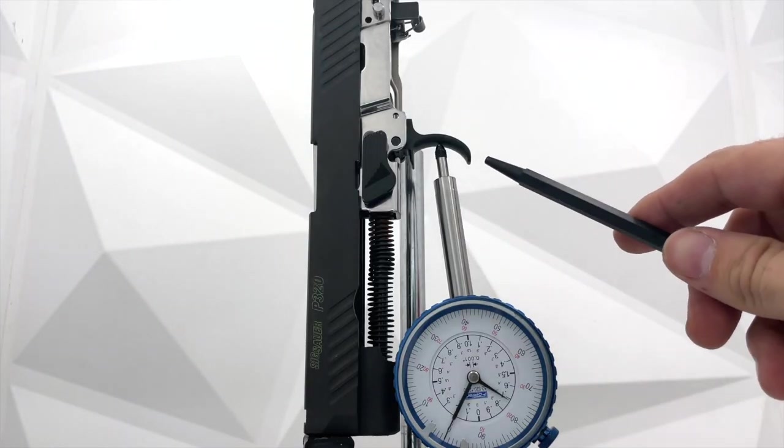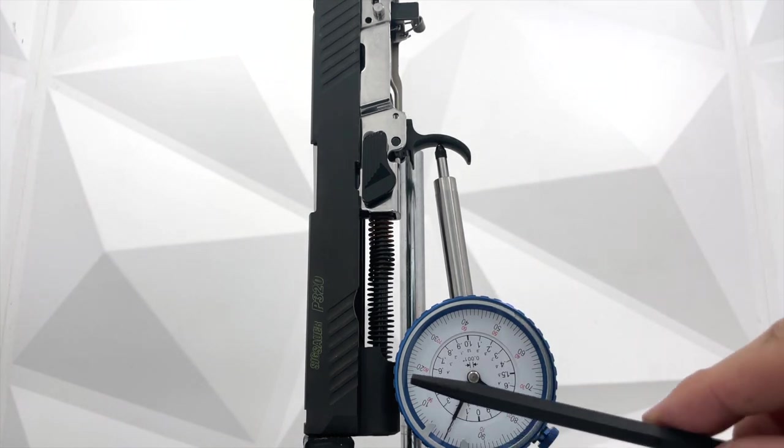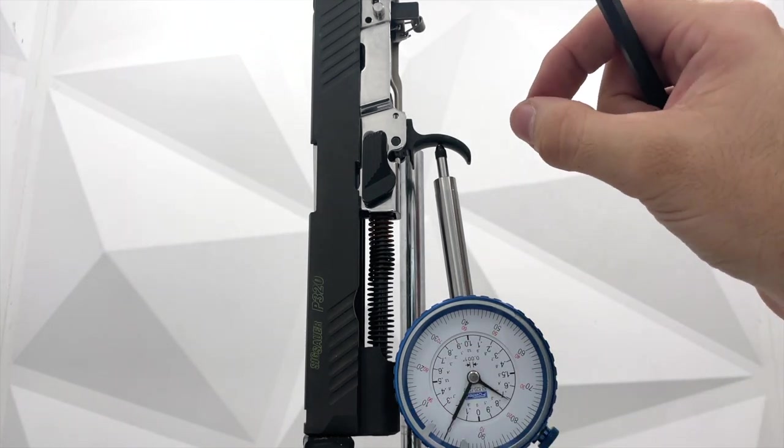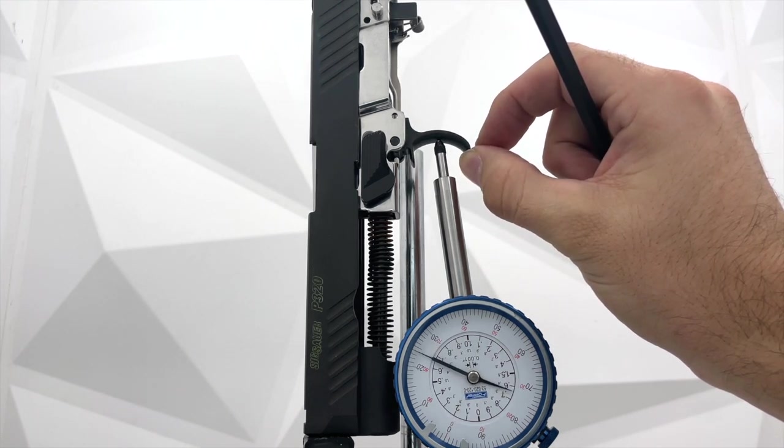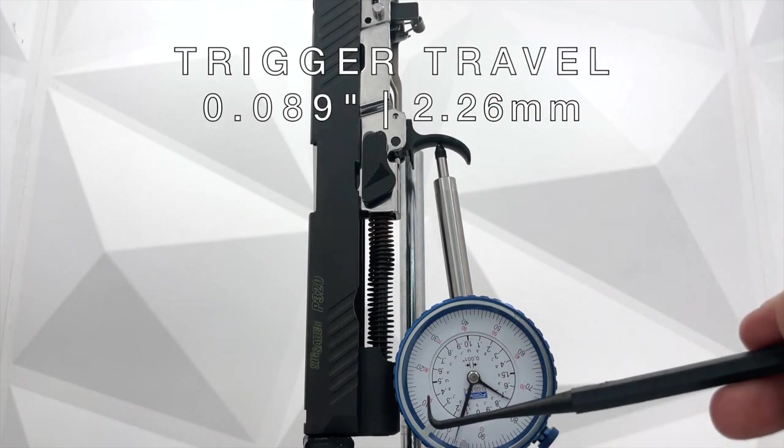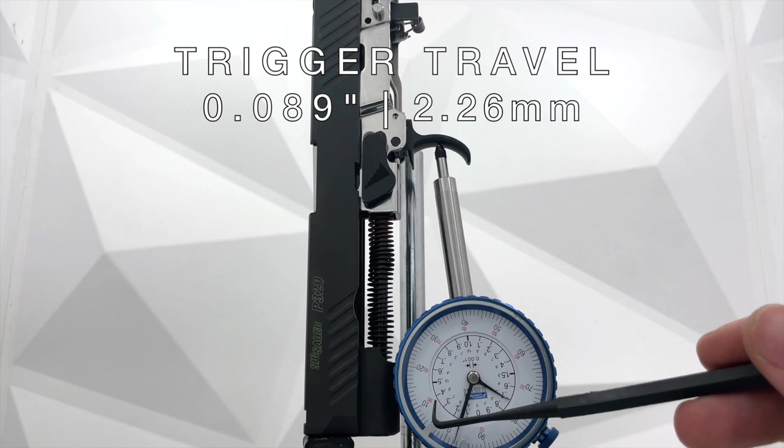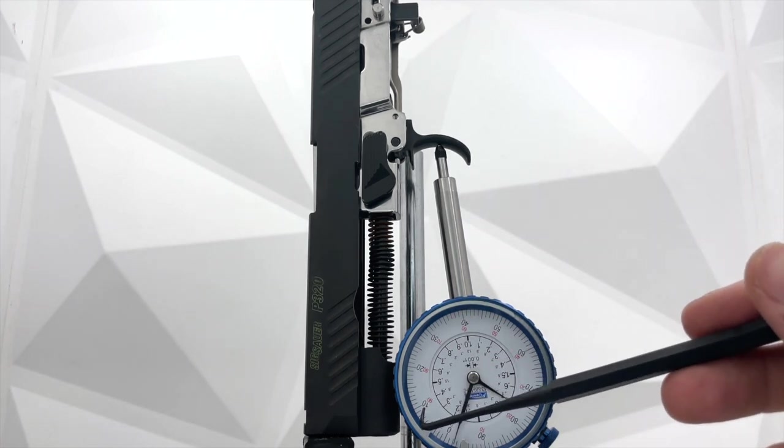Okay. We'll pull the trigger and we'll listen for the striker to drop. And when that happens, we'll take a reading of the dial indicator and make a note of the distance it traveled. Okay. I believe that was 0.090 inches, but I'll take a look at the video later and post the actual reading on the screen here when you're watching it.